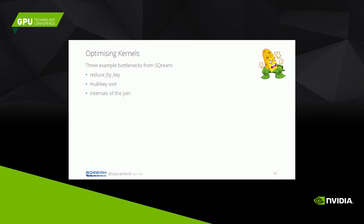One final technique: we often find some kernels are a little slow. At Scream, we found three examples of bottlenecks across many different queries — in reduce_by_key, in multi-key sort, and in the internals of the join. For reduce_by_key, a simple early optimization was to write two code paths: one for chunks where many keys are unique, and one for chunks where keys are very similar with few unique values. The sort and join optimizations are a bit more complicated.